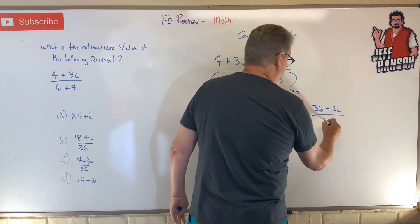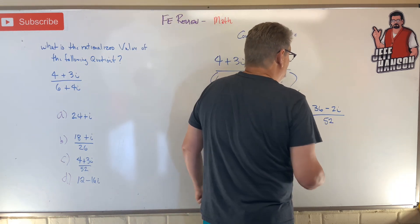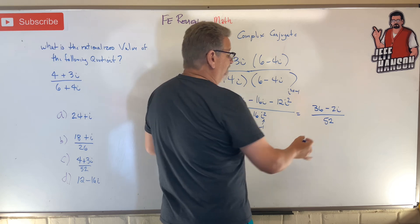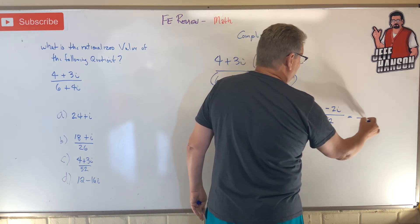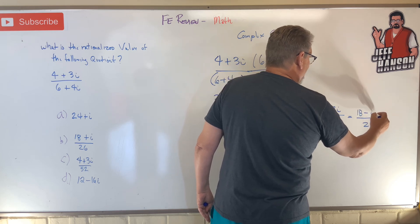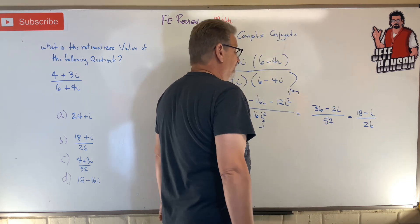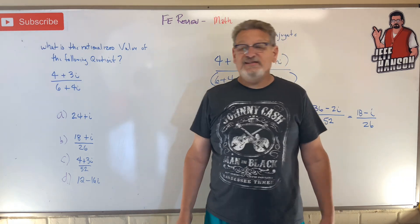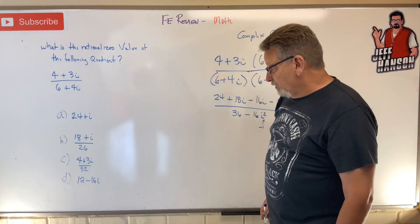So 36 plus 16 is what? 52. And then I could divide everything by a 2, right? And that would put a 26 down there, and an 18 right there, and an i right there. And I think that's about as simple as I can get.